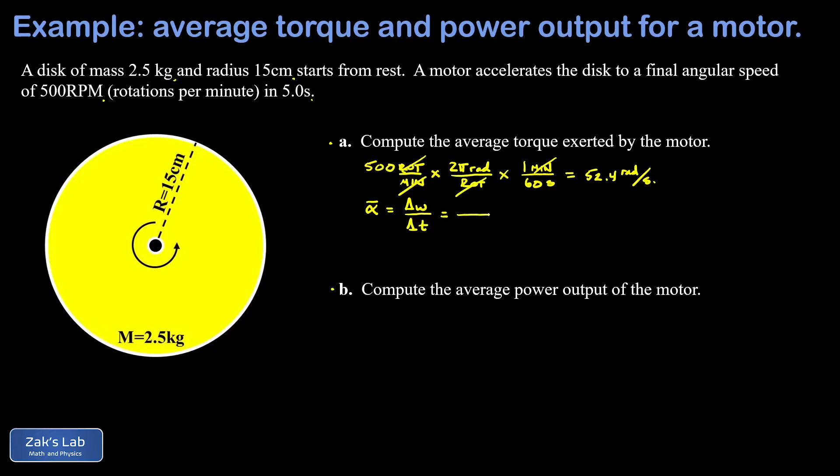Now my initial angular velocity was zero, so delta omega, the change in angular velocity, is just the final value because the initial value was zero. And then delta t is five seconds, and this gives us 10.5 radians per second squared on average.